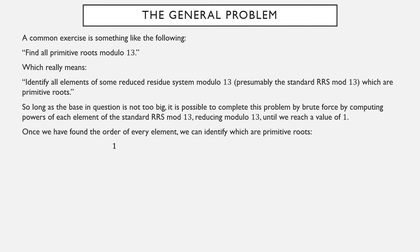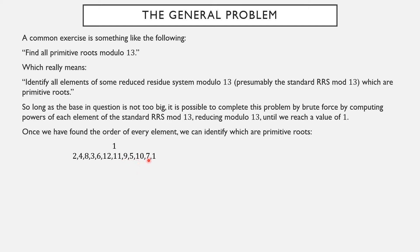1 is already equivalent to 1. Next, I'm going to take powers of 2. I've got them written out here. 2 to the first, 2 squared, 2 cubed. 2 to the fourth is 16, but we're working mod 13, so that's equivalent to 3. To get the next power of 2, I just multiply by 2: 6, 12, 24 is equivalent to 11, 22 is equivalent to 9, 18 is equivalent to 5, 10, and 20 is equivalent to 7, and 14 is equivalent to 1.